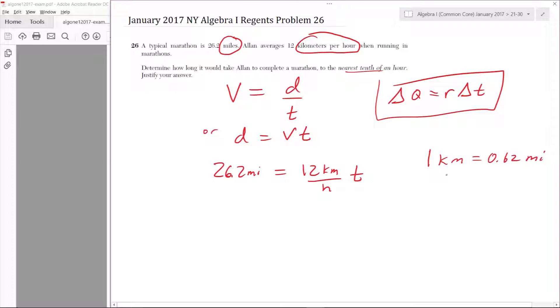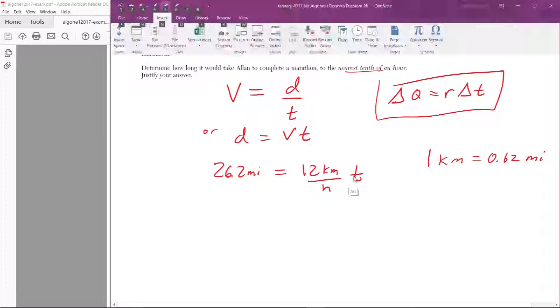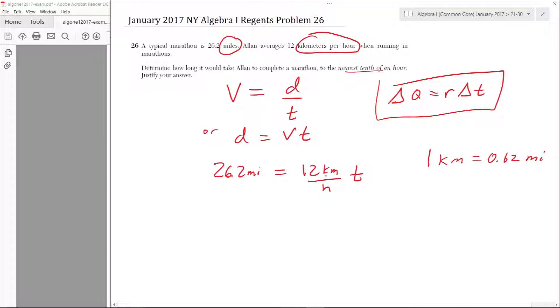So now we're going to multiply this equation. We're going to convert these kilometers to miles. So 1 kilometer in the denominator to cancel out the kilometer in the numerator. In the numerator, we do 0.62 miles. So 26.2 miles is equal to 12 times 0.62. Now this is miles per hour times time.